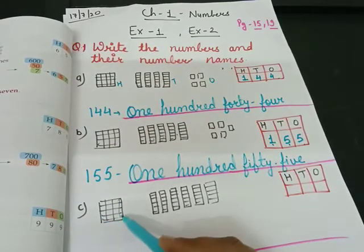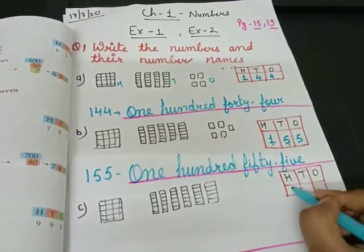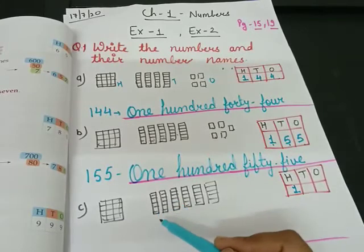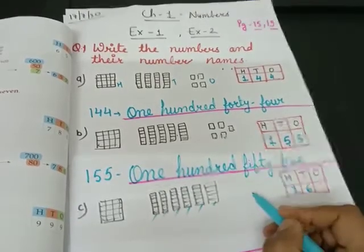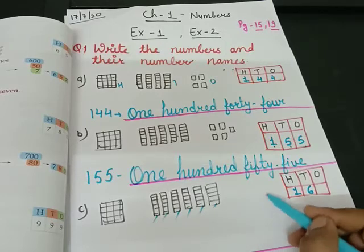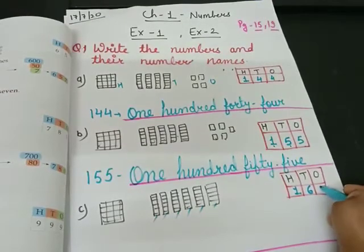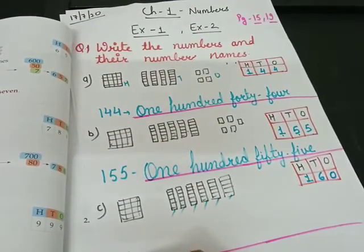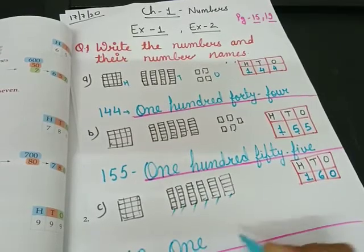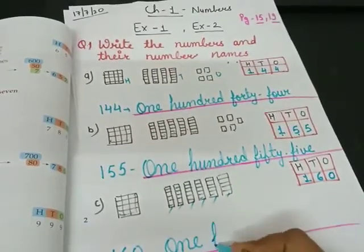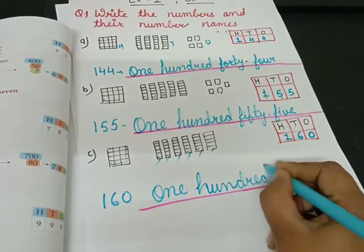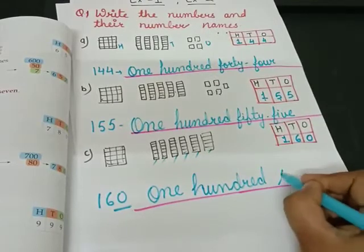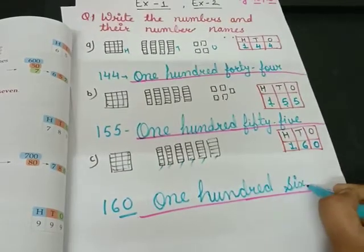Now the next one. How many hundreds are there? One. Write one. How many tens are there? One, two, three, four, five, six. And how many ones are there? No ones. Write zero. Again write this number: one hundred sixty.